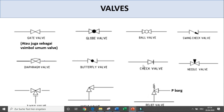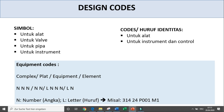Berikutnya ada jenis valve: gate valve, globe valve, ball valve. Kemudian safety relief valve sudah ada di situ. Bisa dilihat dalam katalog yang sudah saya share. Kemudian desain kode — kode desain — simbol-simbol yang ada untuk alat, untuk valve, pipa, untuk instrumentasi — diwakili dengan huruf identitas untuk alat dan untuk desain.